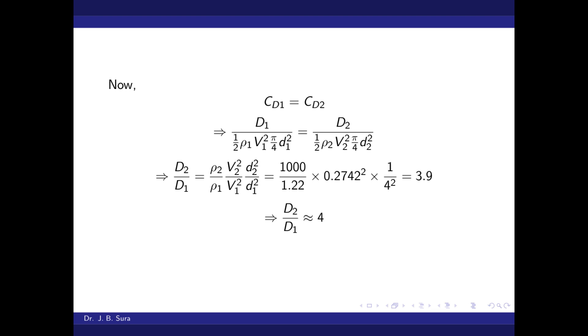Now, because it is a dynamic similar flow, the coefficient of drag will also be constant, so C_D1 = C_D2. The equation for C_D is D divided by half ρV² times the frontal area.